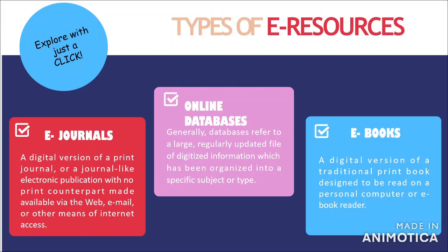Types of e-resources. To supplement the print-based collections, here are the types of e-resources that are easily accessible. E-journals: a digital version of a print journal, or a journal-like electronic publication with no print counterpart, made available via the web, email, and other means of internet access. Online databases: a large, regularly updated file of digitized information organized into a specific subject or type. E-books: a digital version of a traditional print book designed to be read on a personal computer or e-book reader.